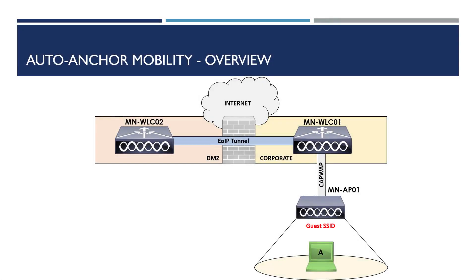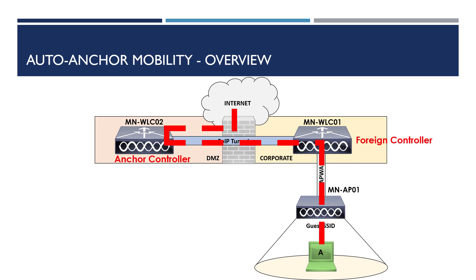Finally, the last roaming event is known as auto anchor. This focuses heavily on the anchor and foreign roles. Auto anchor allows us to anchor a WLAN to a specific controller within our environment, with the most common use case being guest access. Allowing guests onto our corporate network is undesirable. Instead, all clients connecting to the guest network can be forced onto a specific wireless controller located within a DMZ network. In our example, AP01 is associated to WLC01, and WLC02 is a separate controller sat behind a firewall in a DMZ. When client A connects to the guest SSID on AP01, all guest traffic is tunneled to WLC02 via an EoIP tunnel and piped directly out to the internet, ensuring none of the traffic touches the corporate network.